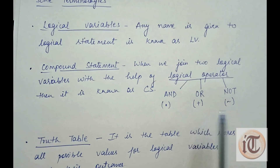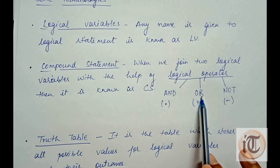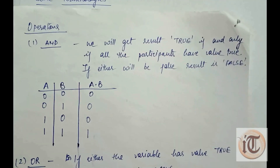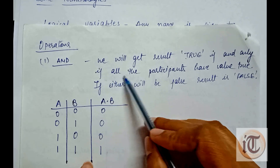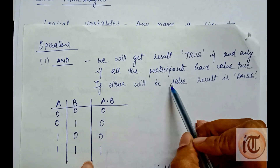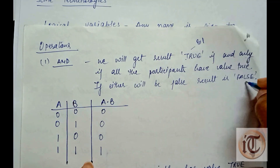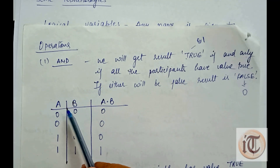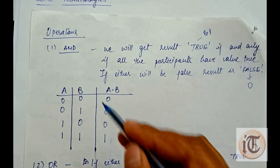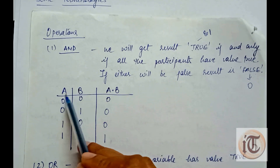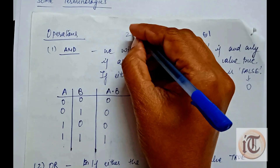We will now discuss the three logical operators — AND, OR, and NOT — and how to design the truth table for each. For the AND operation, we get a result of true if and only if all the participants have the value true; if either is false, the result is false. In Boolean algebra, true is denoted by 1 and false by 0. For the AND operation, we use the dot operator. With two variables a and b, the truth table has 2 to the power 2, which is 4 possible combinations.